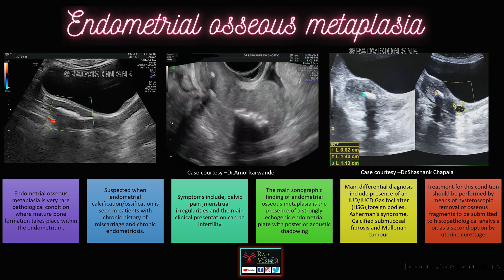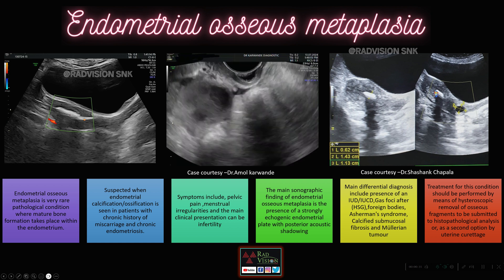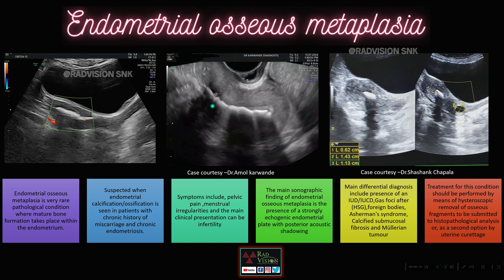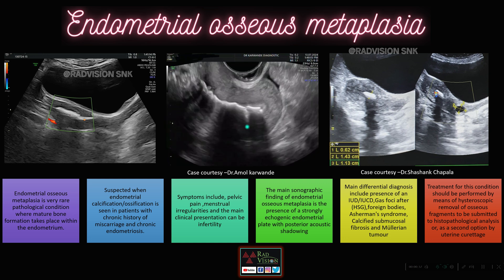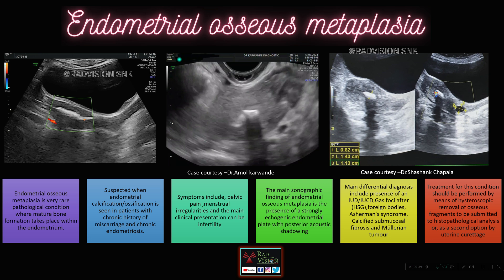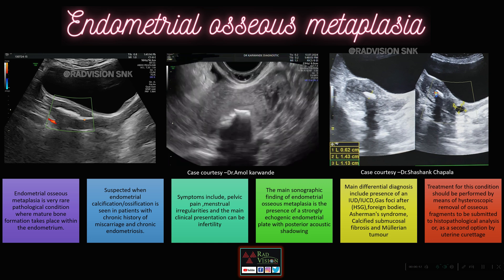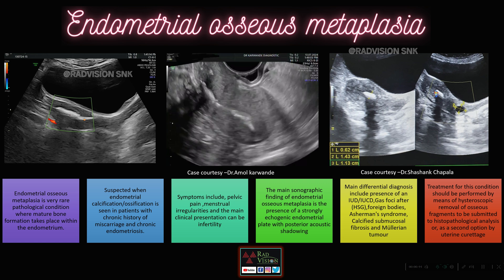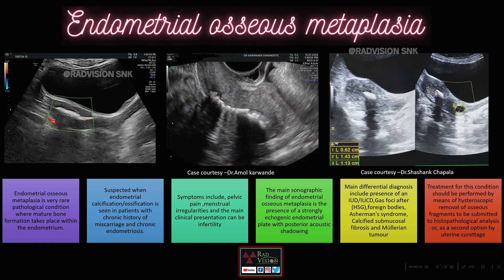This is another case where you can see calcifications in the lower endometrium with post-acoustic shadowing, and even a Nabothian cyst in the cervix. Here you can see dense endometrial ossification with post-acoustic shadowing, and incidentally you can also see a hemorrhagic cyst or endometriotic cyst in the right adnexal region.